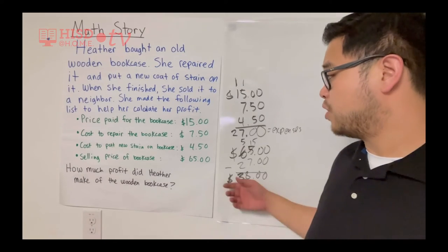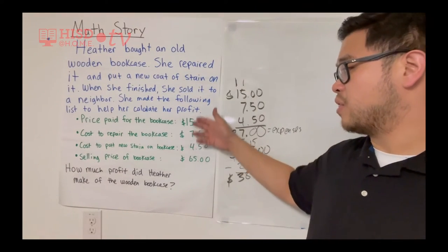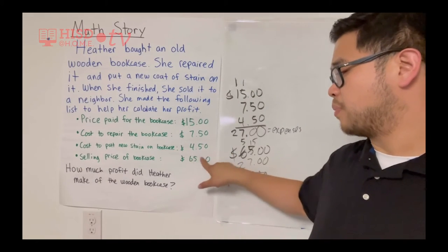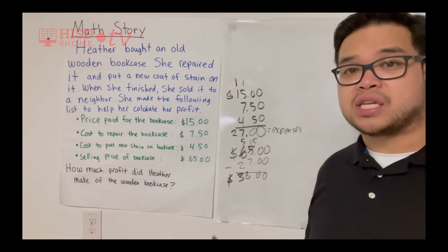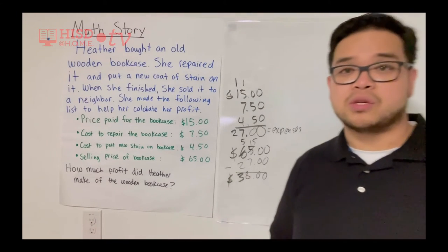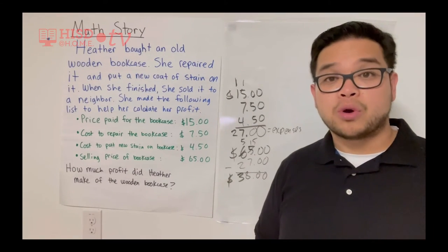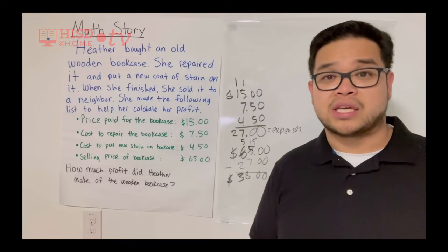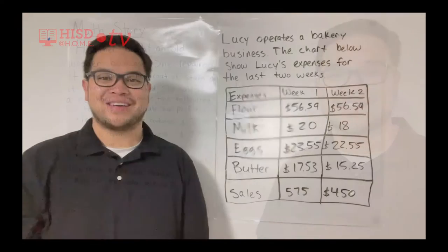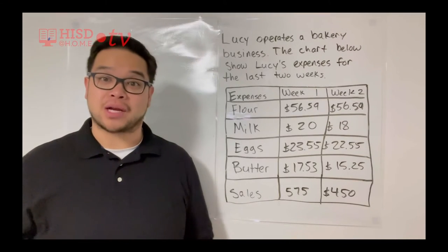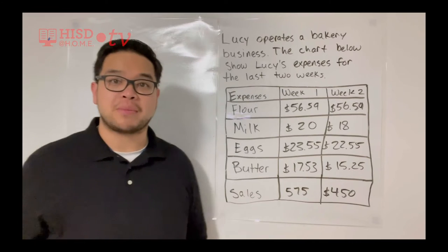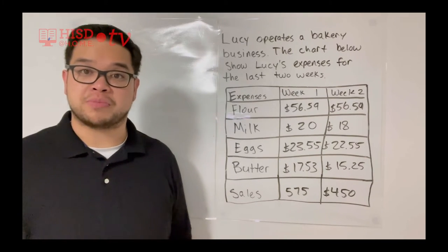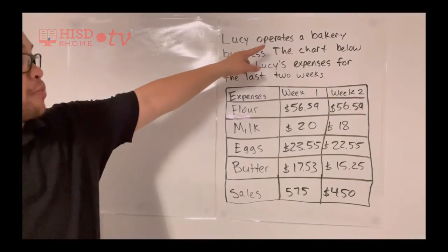Her profit is the amount of money she's making that she didn't have to spend before. In order to find it, she calculated her expenses, then subtracted that sum from the selling price to get the profit. We're going to do another problem together so you have some practice before your exit ticket.